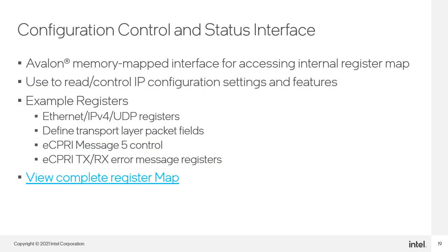The CSR interface is a memory-mapped interface used to access the IP's internal register map for reading and controlling IP configuration settings and features. Using the CSR interface, you can program MAC, VLAN, IPv4, and UDP addresses for packet filtering and routing, issue eCPRI message 5 packets, and read, write, clear, and mask eCPRI errors. Use the link on this page to view the complete IP register map.